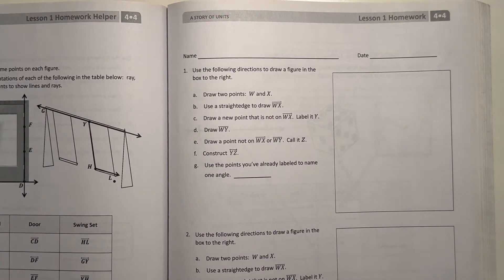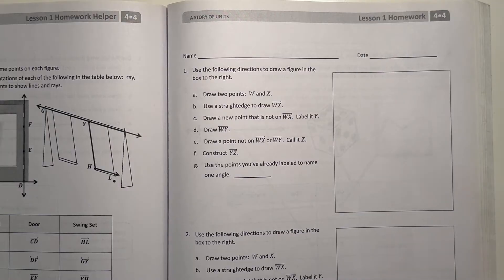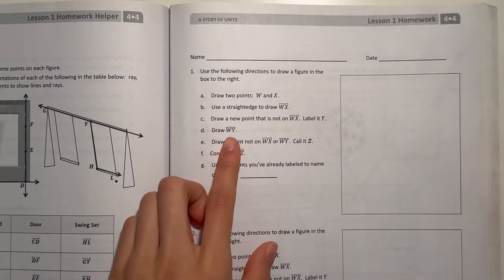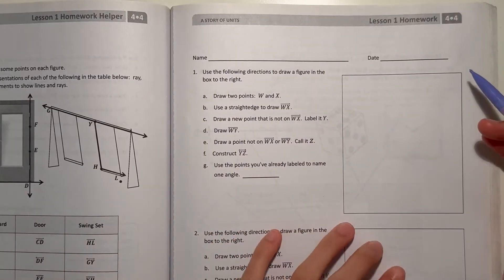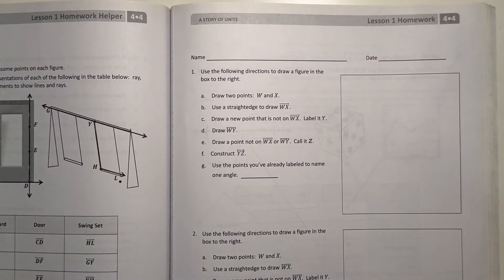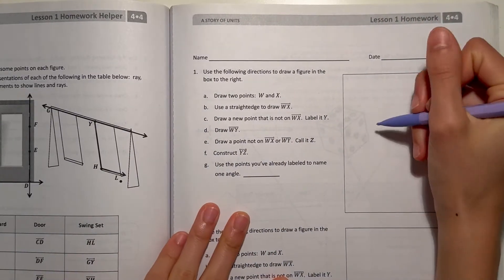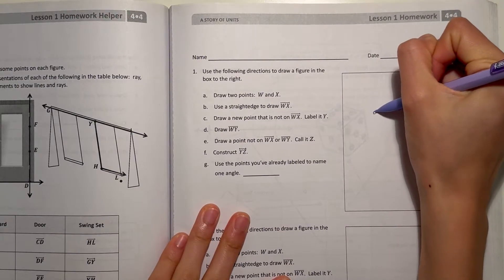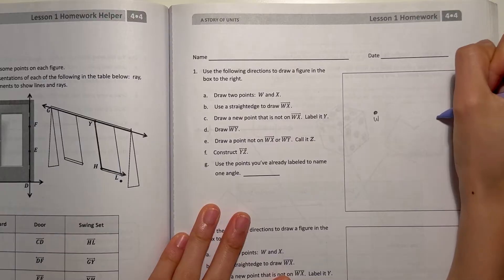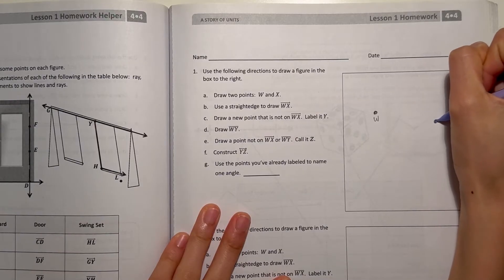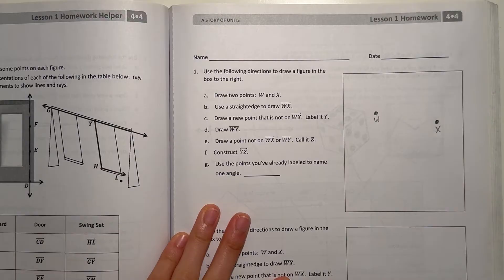Number one: use the following directions to draw a figure in the box to the right. So A says draw two points, W and X. One point is just a dot, so W and X — we can draw these two points anywhere, as long as it's in the box.